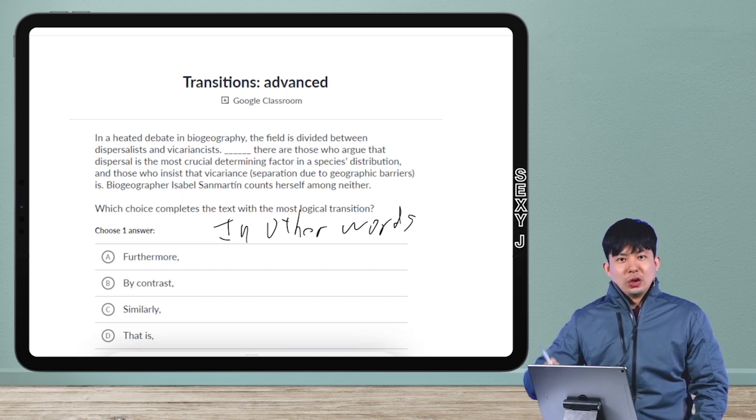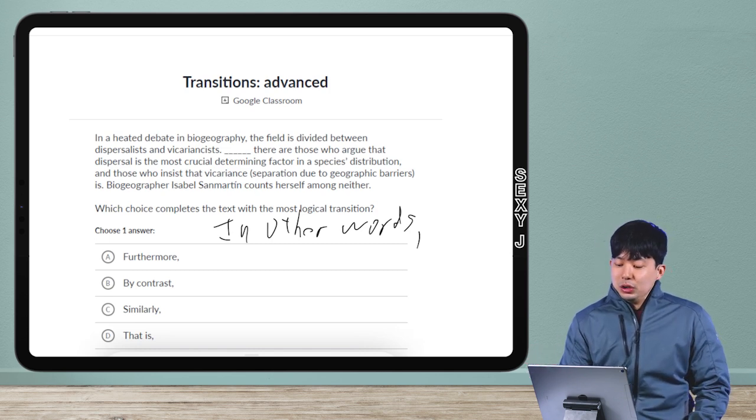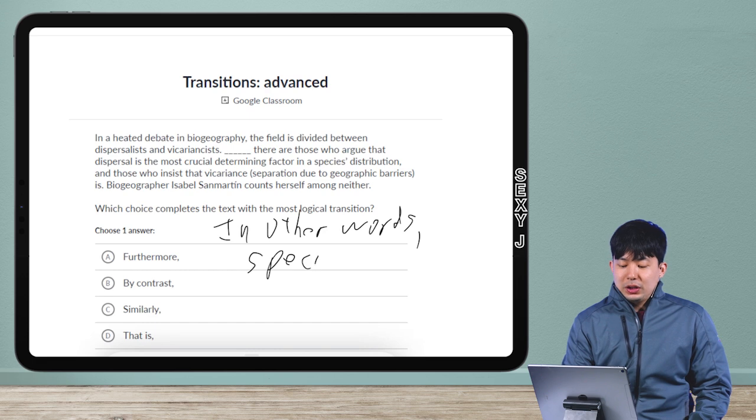It's on the advanced transitions page, which just means honestly they're giving themselves an excuse to make questions that are a little bit iffy. There's even one in which people were very mad about—I'll get to that one next time. So in other words, or you could even think about it as like specifically, either of those would be fine.